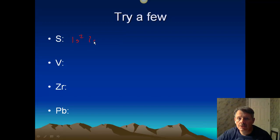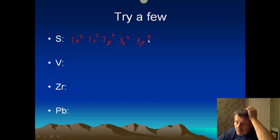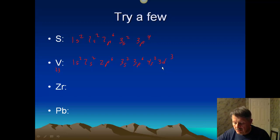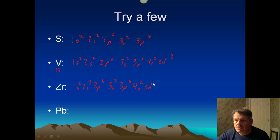Sulfur is number sixteen: 1S2, 2S2, 2P6, 3S2, 3P4 — sixteen electrons total. Scandium is 1S2, 2S2, 2P6, 3S2, 3P6, 4S2, 3D1 — twenty-one electrons, ending in 3D1. Zirconium is a whole level further down: 1S2, 2S2, 2P6, 3S2, 3P6, 4S2, 3D10, 4P6, 5S2, 4D2.